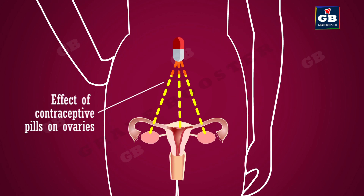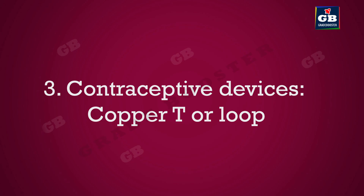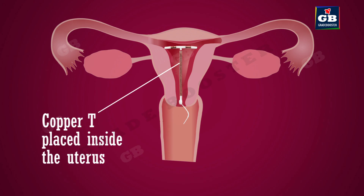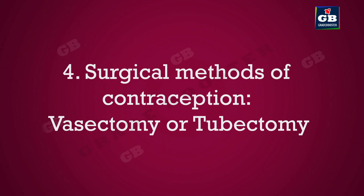Contraceptive method 3: contraceptive devices — for example, copper T or loop. The loop or copper T is placed in the uterus to prevent pregnancy. However, it can cause irritation and leads to various side effects. Contraceptive method 4: surgical methods of contraception.